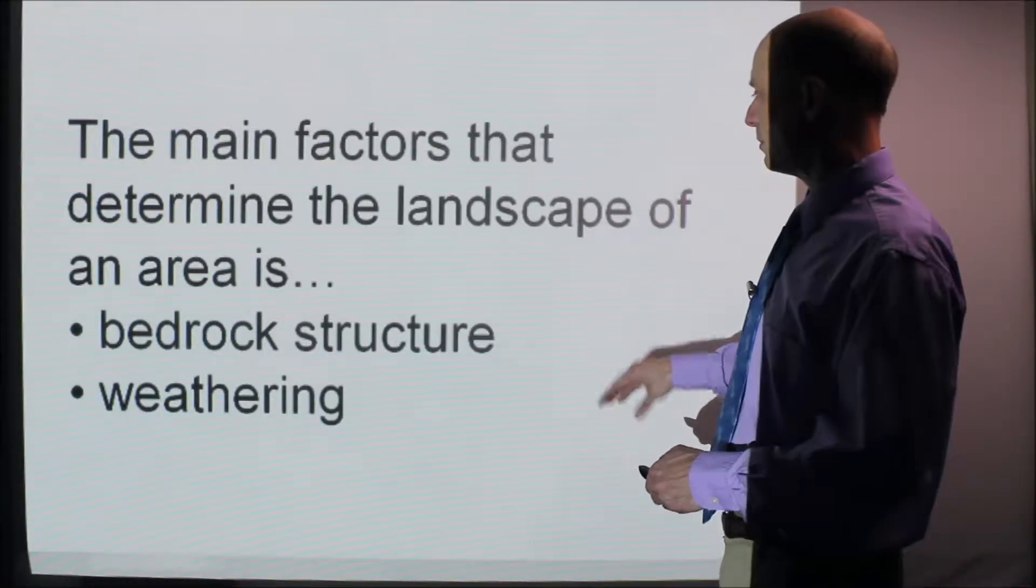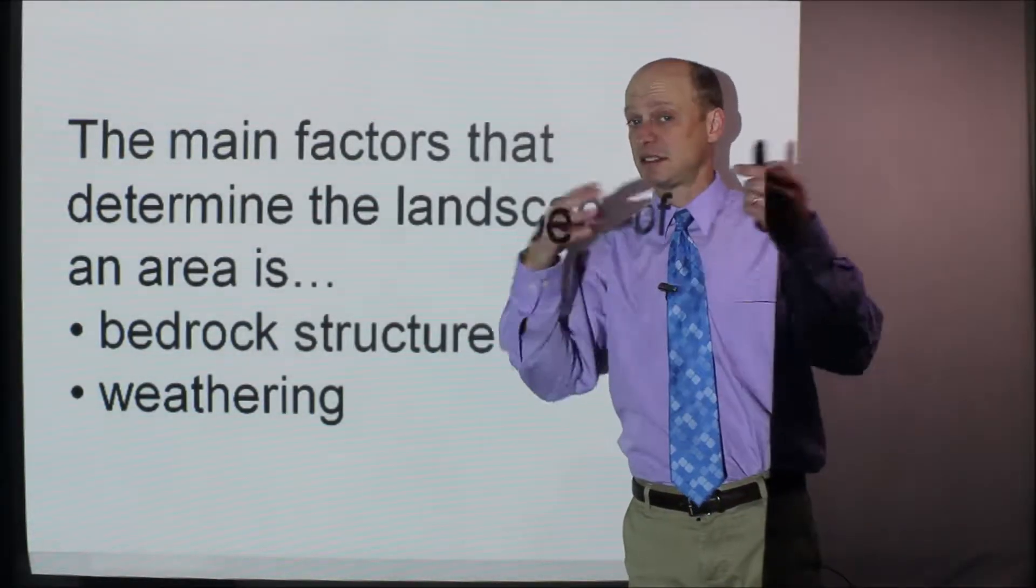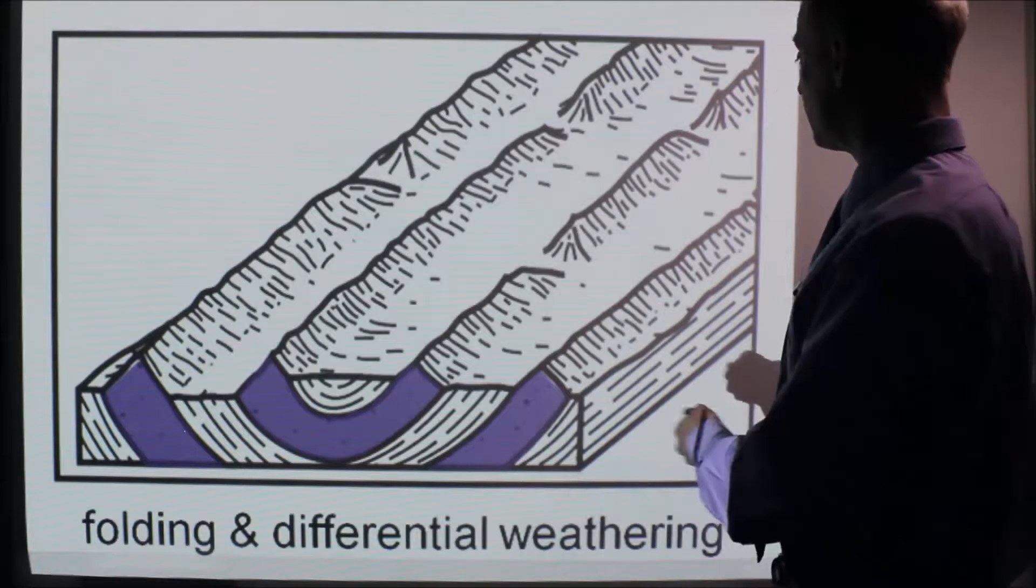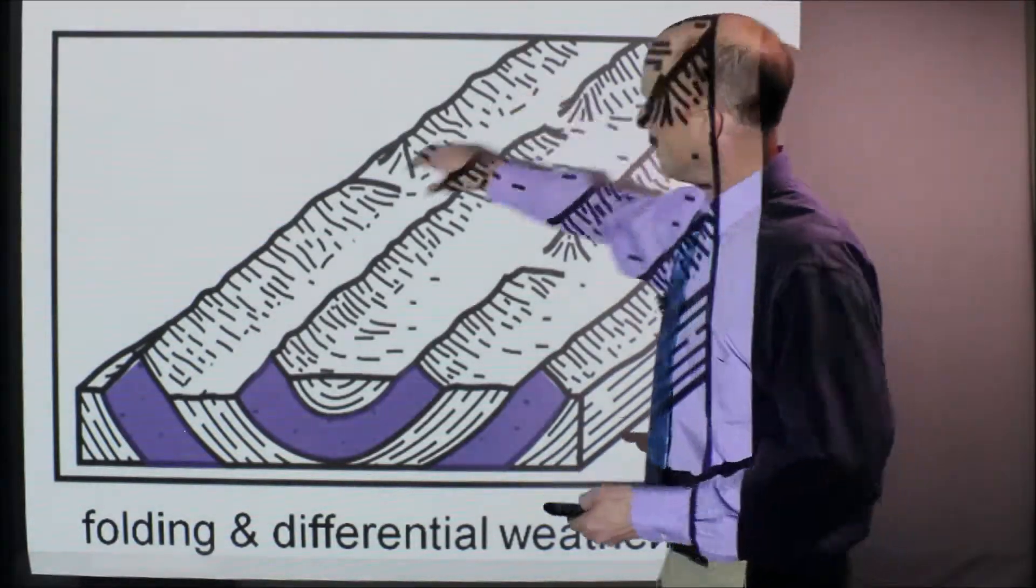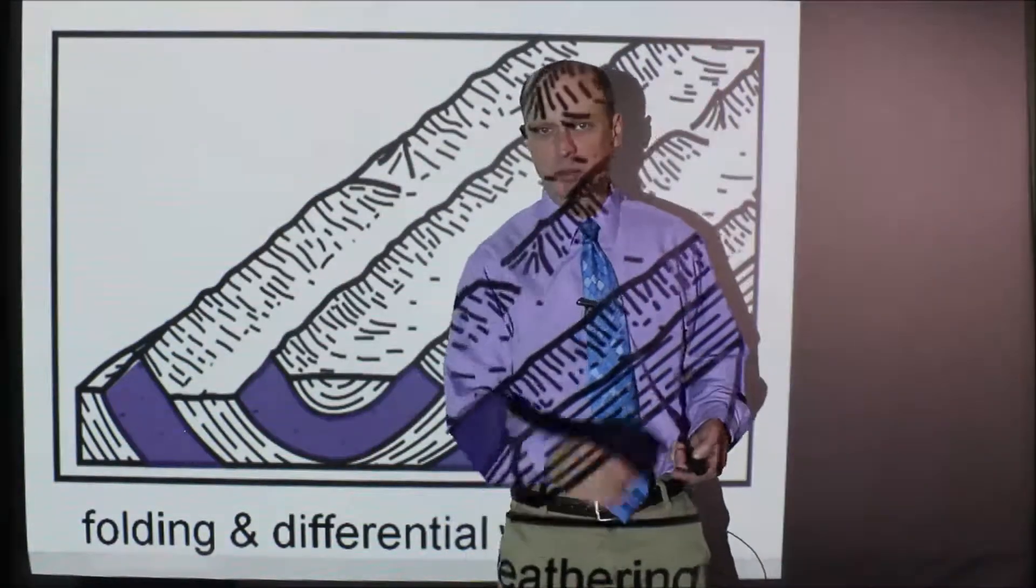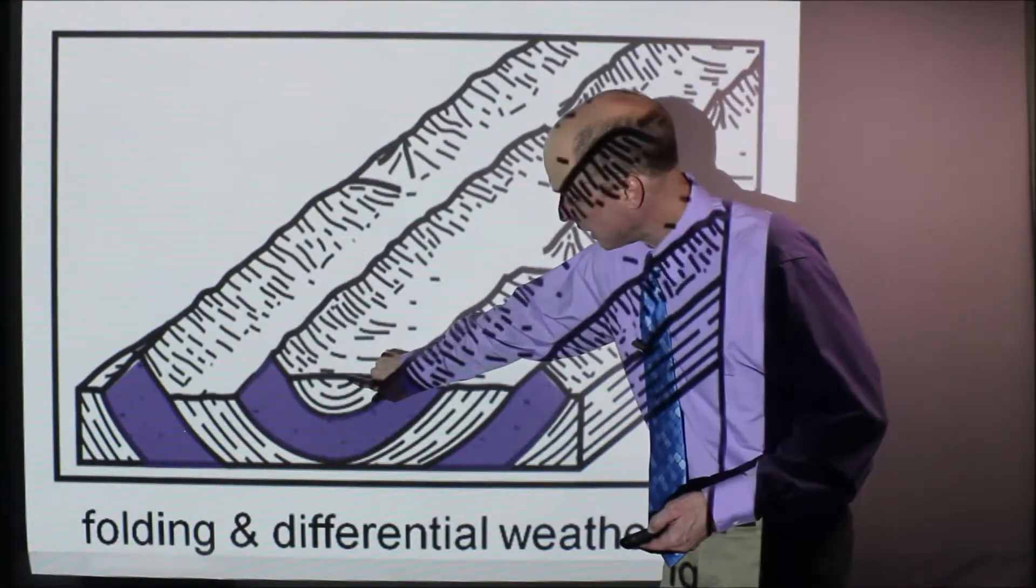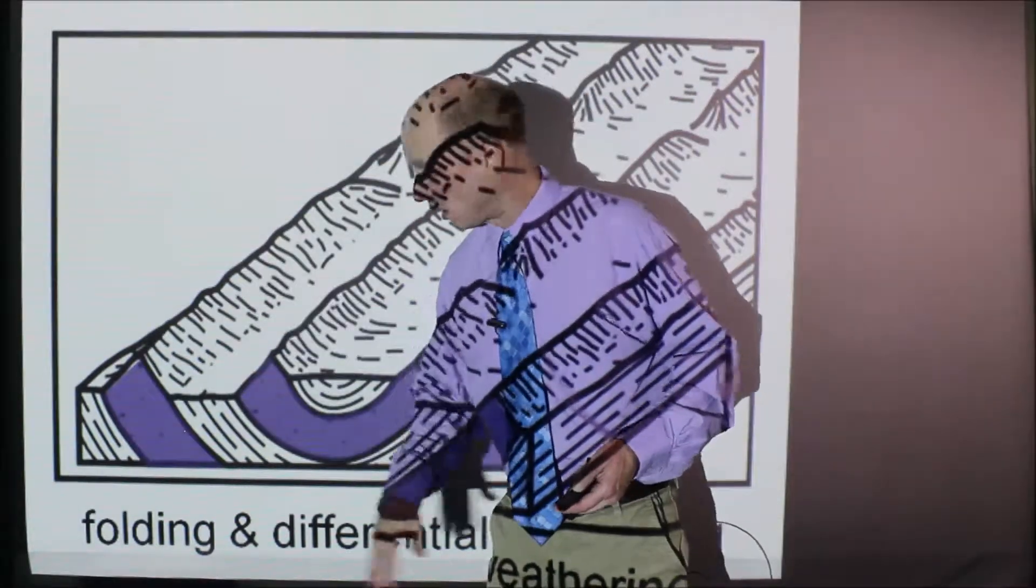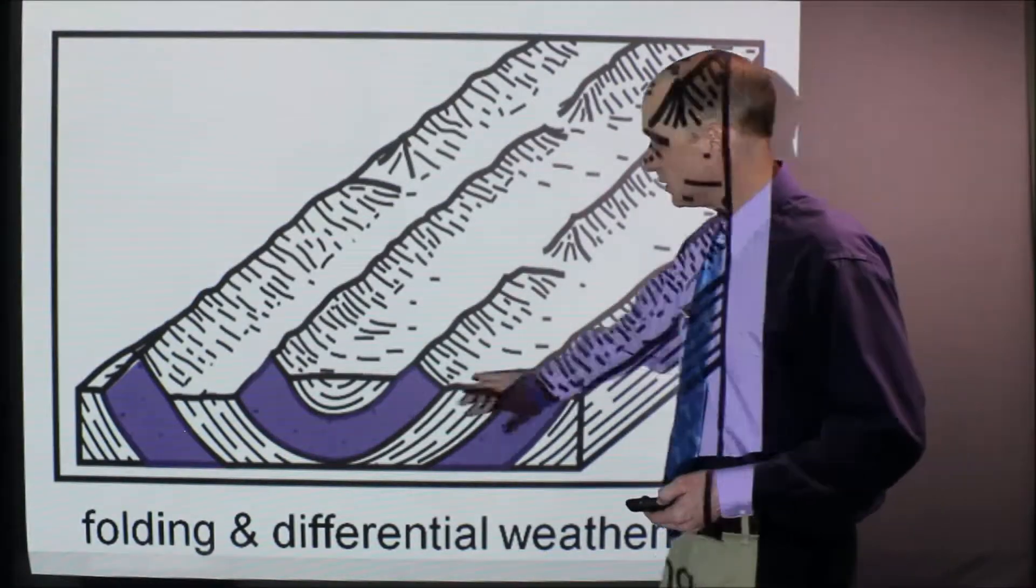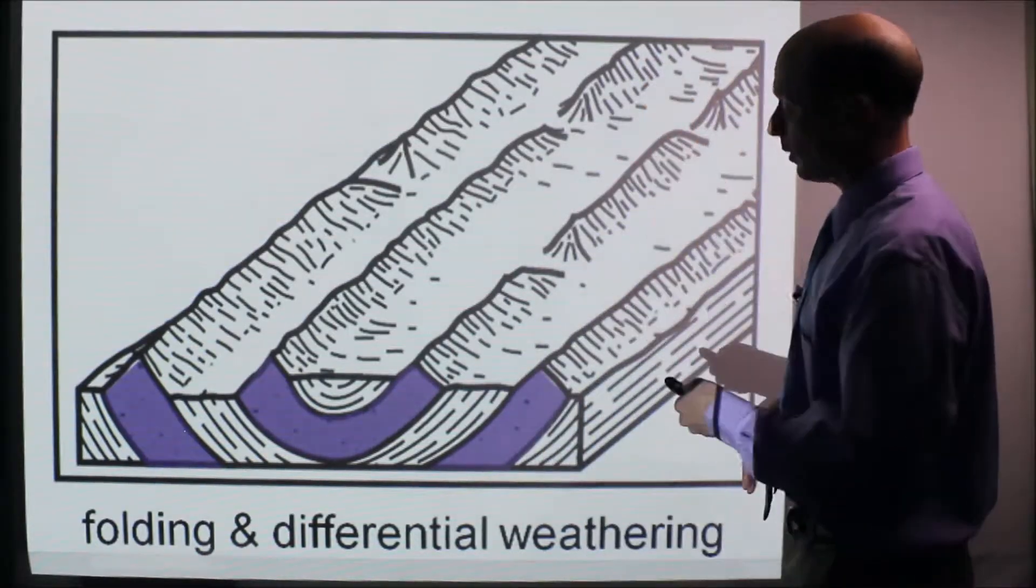The main factors that determine the landscape of an area is really the bedrock structure and weathering, or how weathering has affected this bedrock structure over so many years. So in this case, the folding and differential weathering - you see these hills that kind of go with the valleys in between, these long straight hills. They're because of this folding here, and what I highlighted in purple, those rock layers are more resistant to weathering. They didn't weather as much. These rock layers here, this is shale here in between, they weathered more. So there's not as much of that rock has been carried away. And that's how we get that shape. So that's what I call differential weathering.